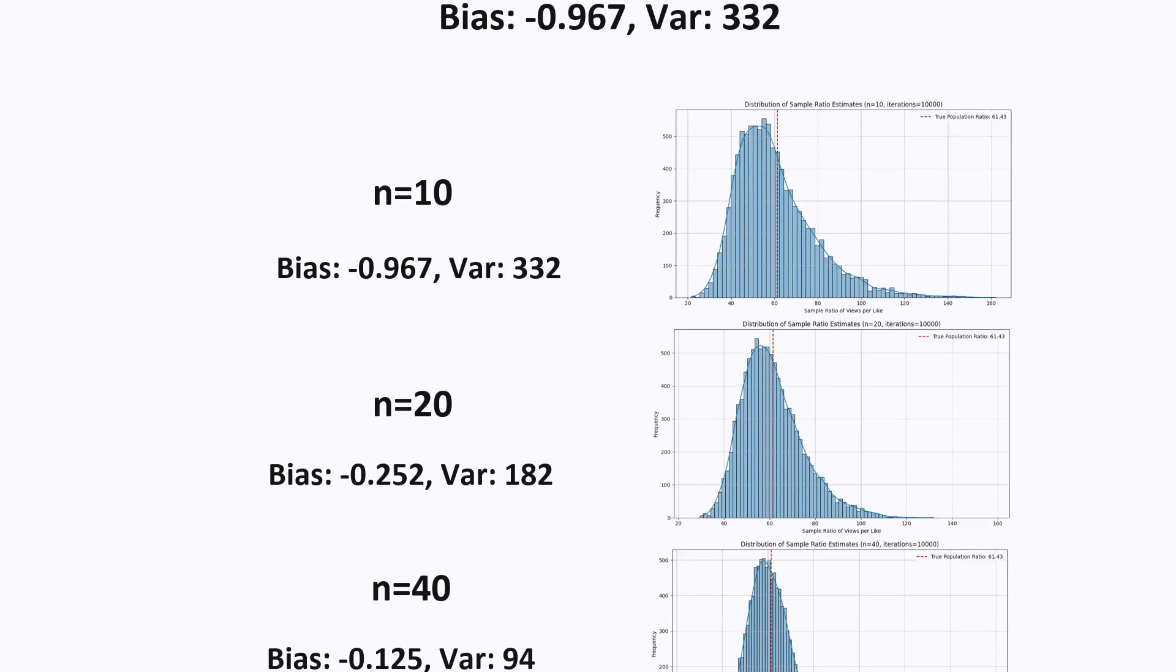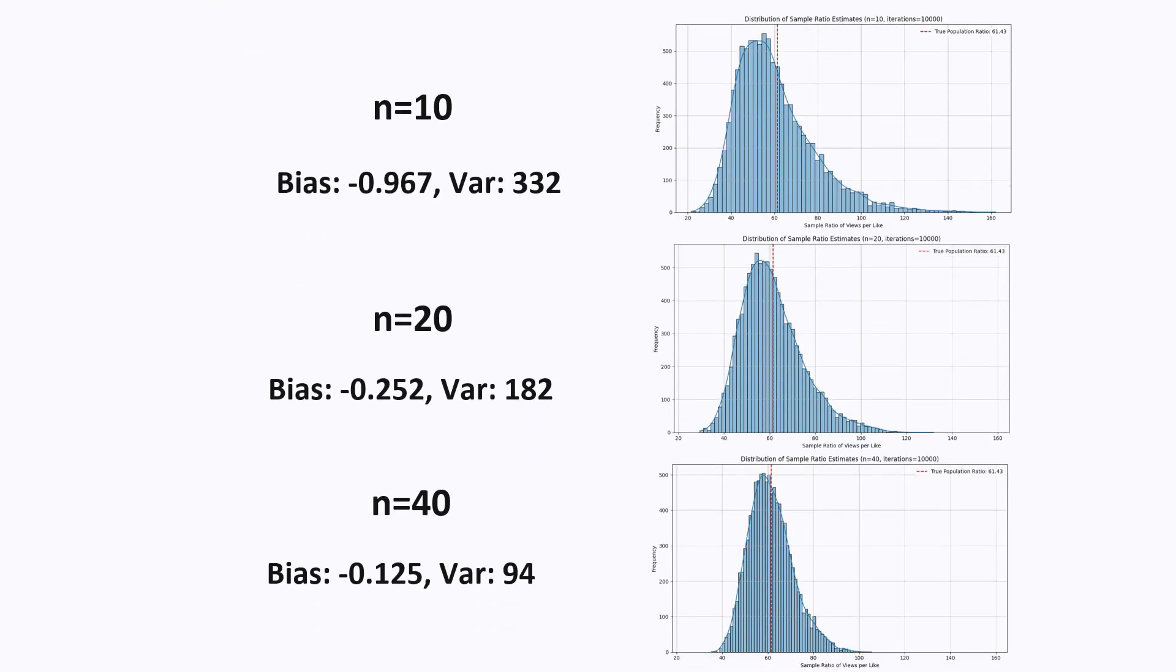What if we sample more than 10 videos? Here I change the simulation to simulate what if we sampled 20 or 40 videos to estimate the ratio instead of 10. And what we find is both the bias and the variance get closer and closer to zero as sample size increases.